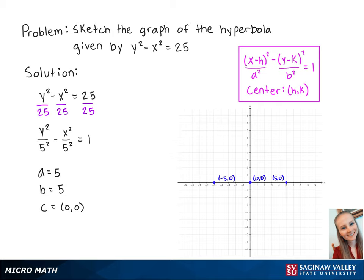Since b is equal to 5, we're going to graph two points, 5 above and 5 below the center. So the first point is at 0, 5, and the second point is at 0, negative 5.